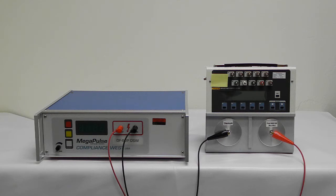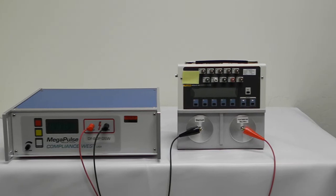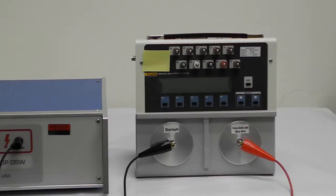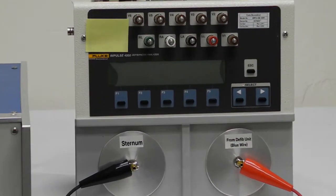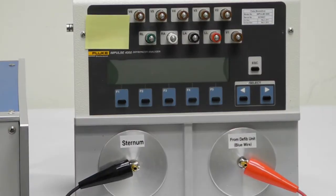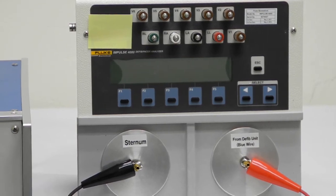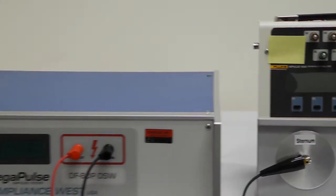We will use the Fluke Biomedical Impulse 4000 for this demonstration, but the Fluke 707010 combination can also be used. The correct surge generator for this test is our Megapulse D-Fib 5, and it should be equipped with our 100X option.